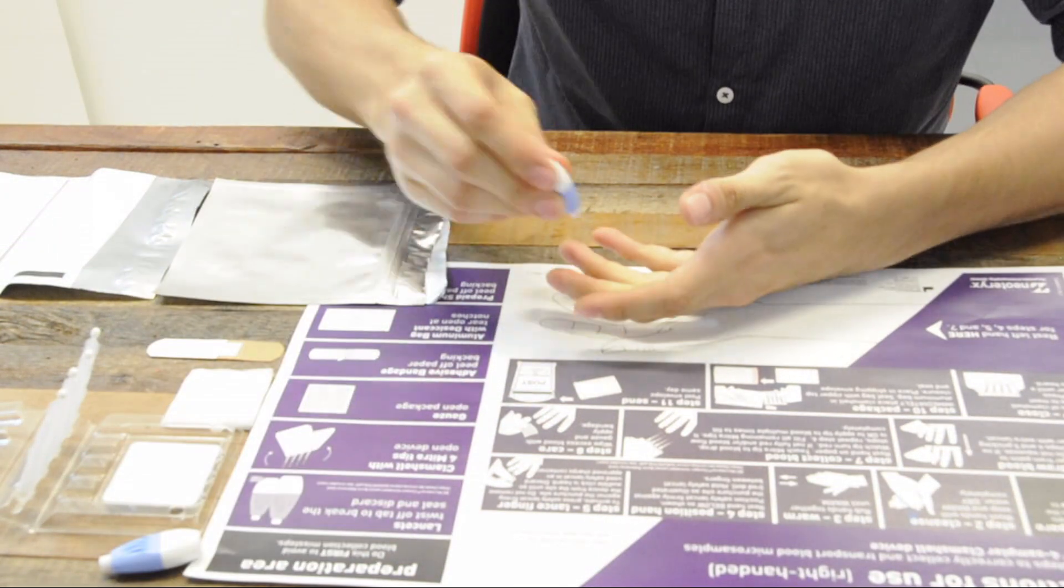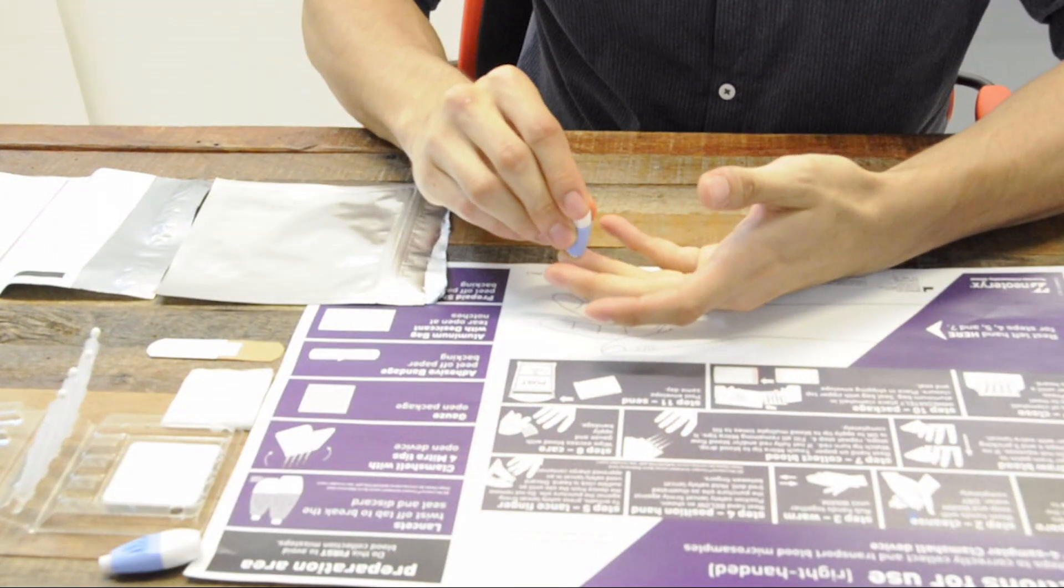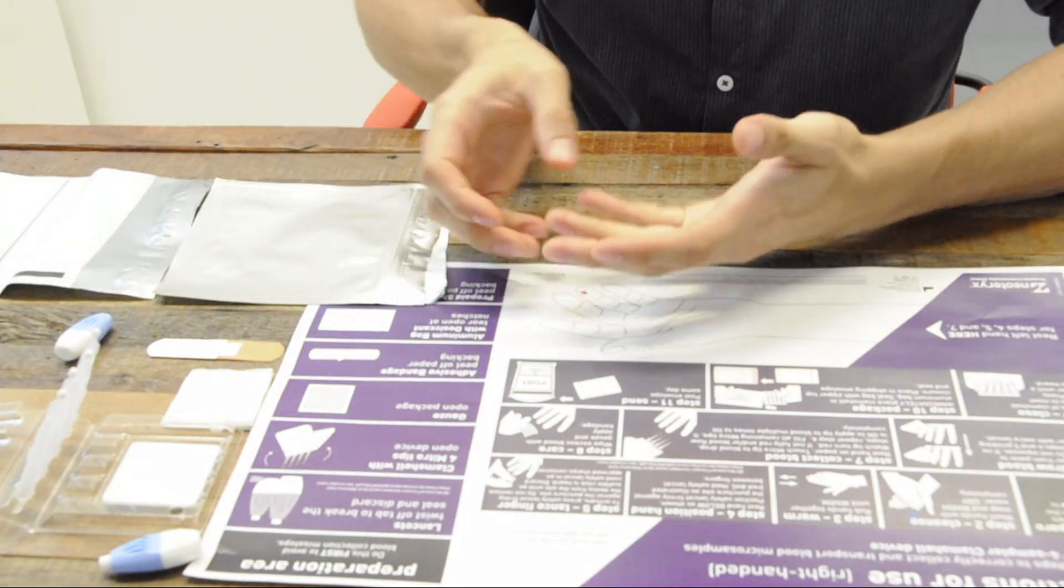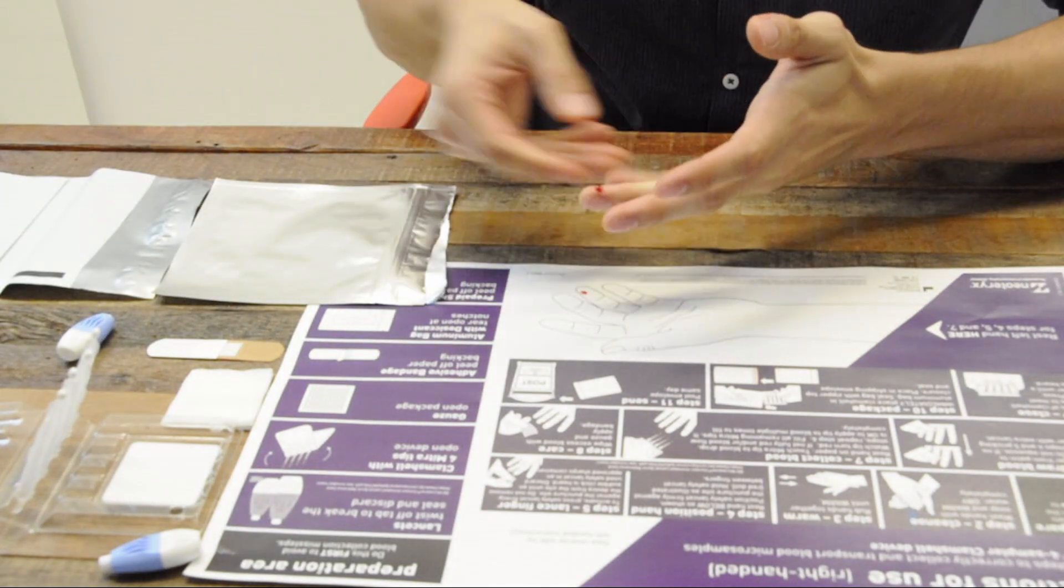Now you're ready for the finger prick. Just place the safety lancet firmly against the middle of your fingertip and press down until you hear a click.